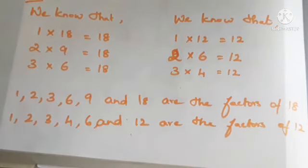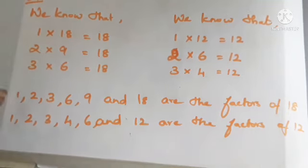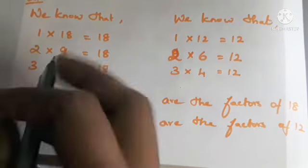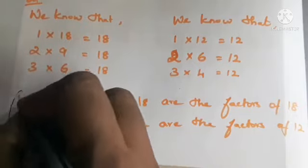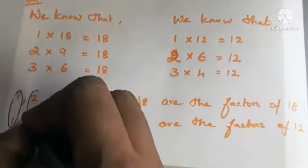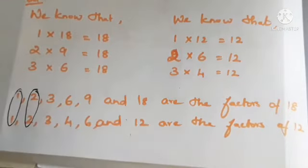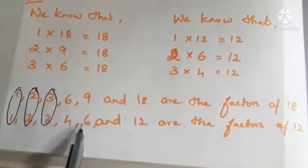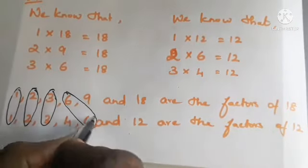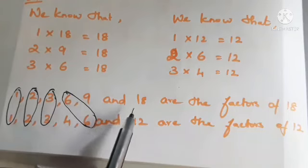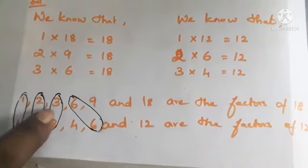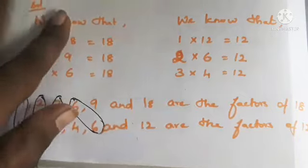Now find the common factors by identifying numbers that appear in both lists. From 18's factors and 12's factors: 1 is common, 2 is common, 3 is common, 4 is not in 18's factors, but 6 is in both. Nine, 12, and 18 appear only once. So the common factors are 1, 2, 3, and 6.